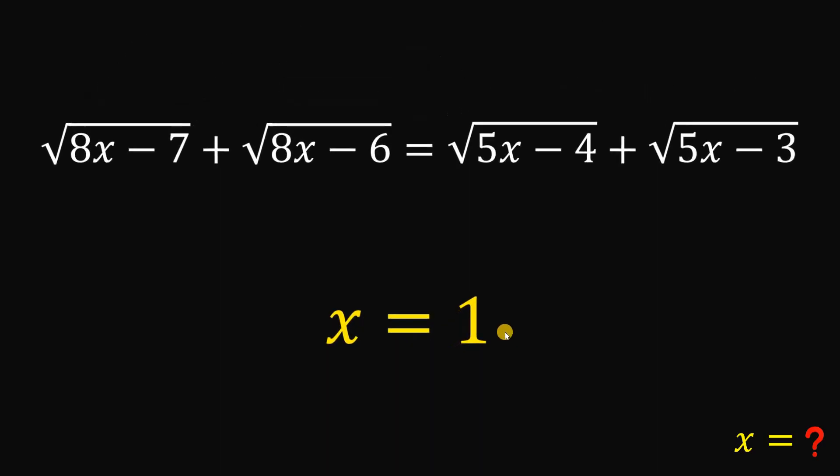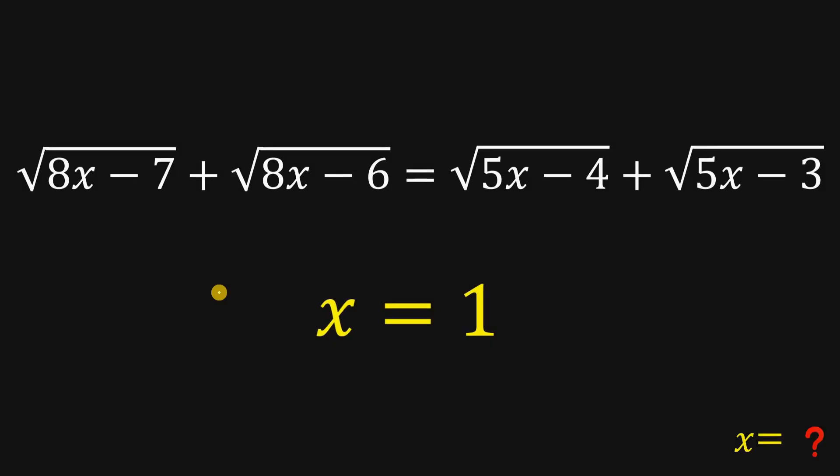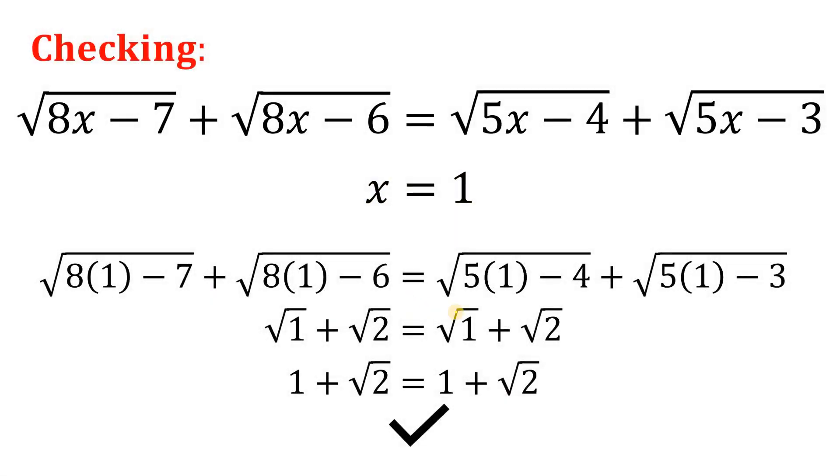Therefore, x equals 1. And 1 is technically greater than 7 over 8. Now, let's check if 1 is really the answer to this equation. And that is, we get 1 plus square root of 2 on the left-hand side and the right-hand side of our equation.